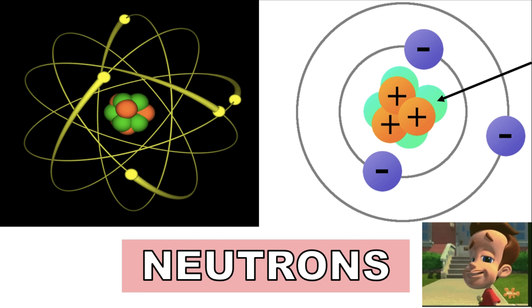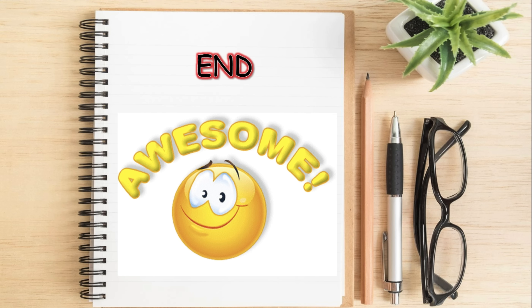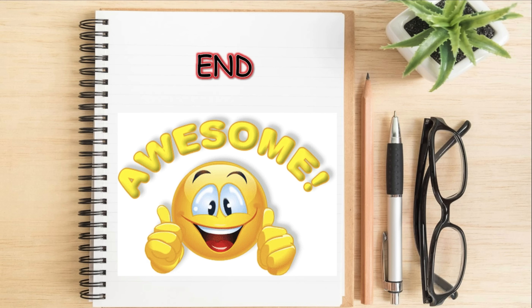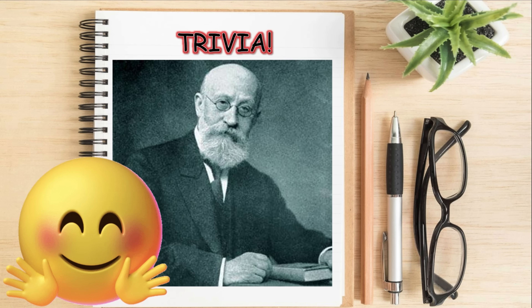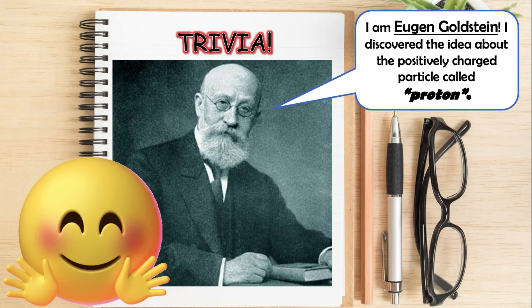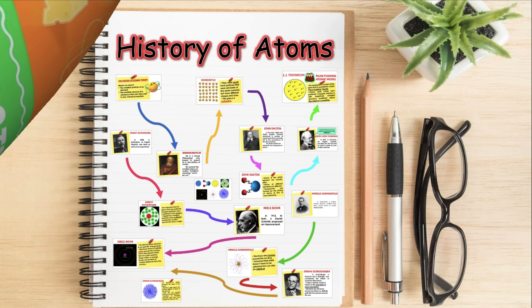Neutrons were discovered by James Chadwick in 1932. You did awesome — did you refresh some of your stock knowledge about chemistry? Now let us have some trivia. He is Eugen Goldstein. He discovered the idea about the positively charged particle called proton. Now let us proceed to the history of atomic theory.